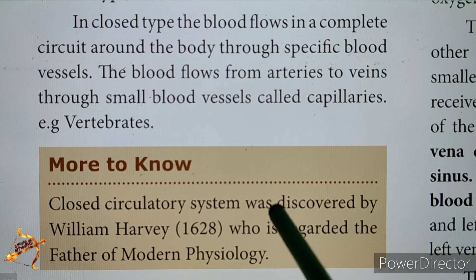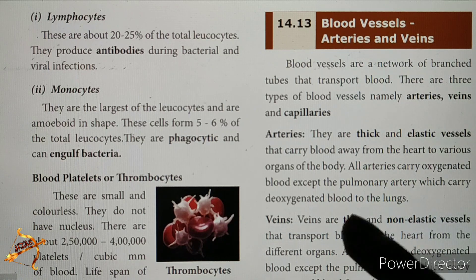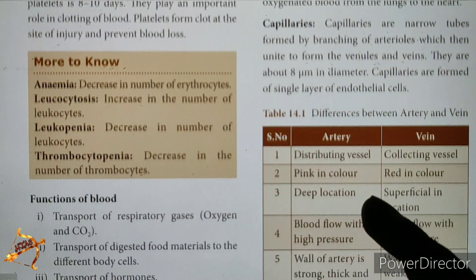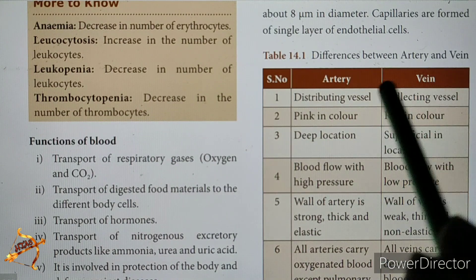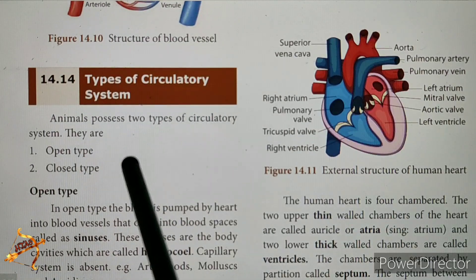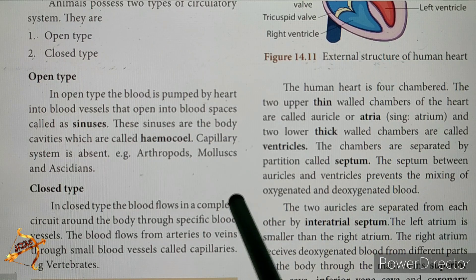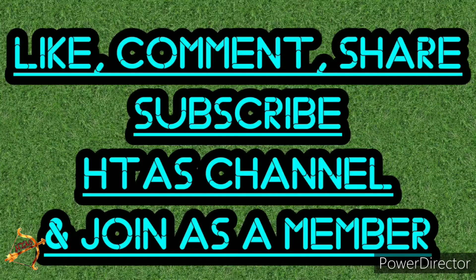To summarize this video: we covered blood vessels — arteries, veins, and capillaries — their differences, and the two types of circulatory systems: open type and closed type. If you like this video, please like, share, and subscribe to this channel. Please also join the Telegram channel — there is a link in the description. Thanks for watching.